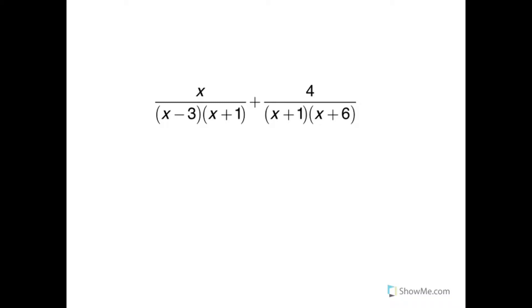Let's add these rational expressions, and in this example the denominators are already factored. So x is over x minus 3 times x plus 1,